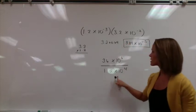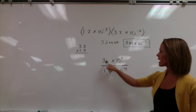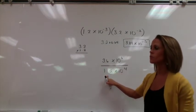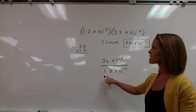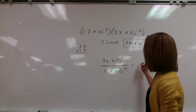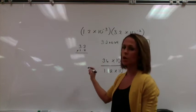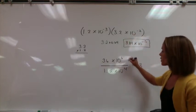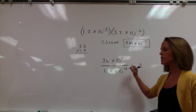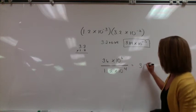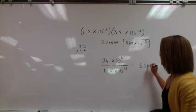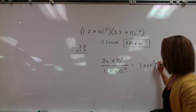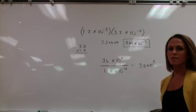The next problem is division. We're going to handle our coefficients first. 3.6 divided by 1.2 should be pretty simple — that is just simply 3. When you have exponents in division, you're going to subtract them. So the answer for sig figs is 3.0 times 10, and 6 minus 4 is 2. The answer is 3.0 times 10 to the second.